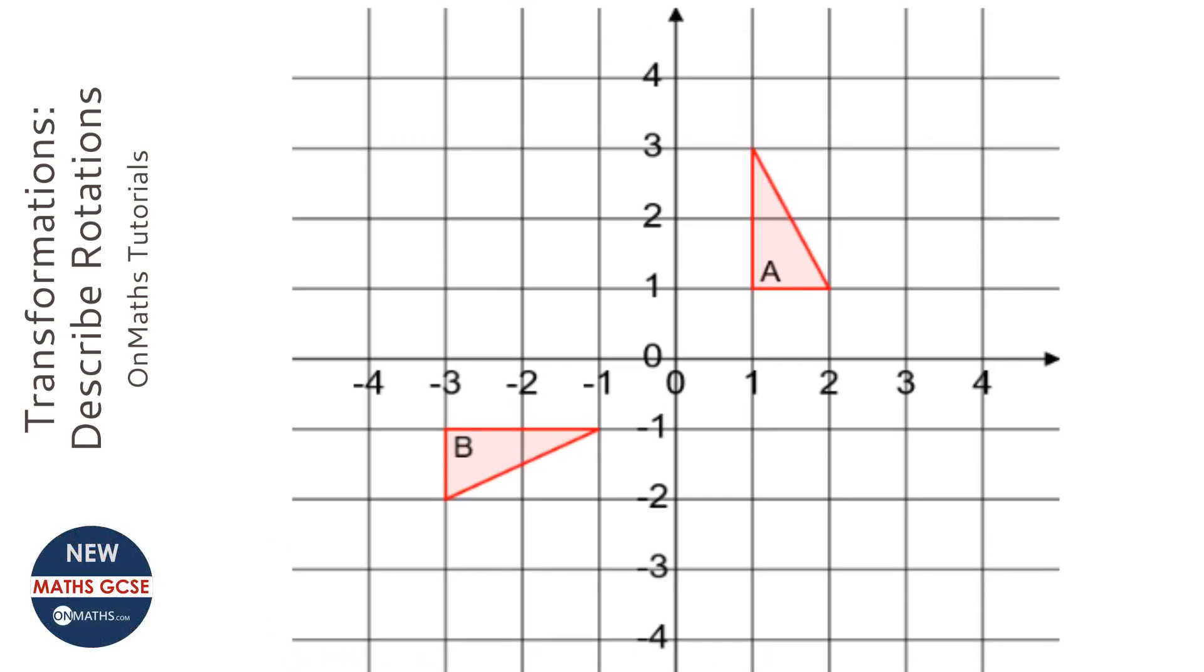Now, looking at this, I go through my four transformations and think to myself, has it just been moved? Well, no, it's been rotated, so it's not a translation. It's not changed size, so it's not an enlargement. It's not really been reflected. No, it hasn't.